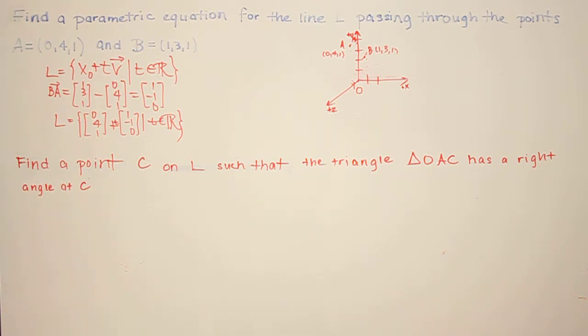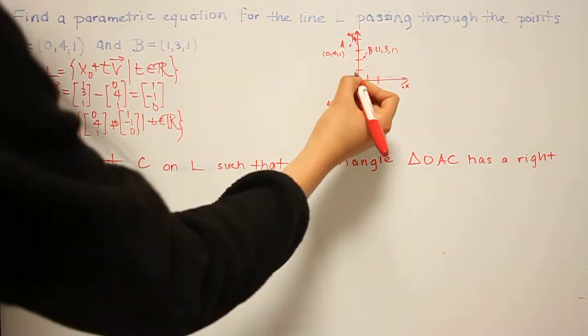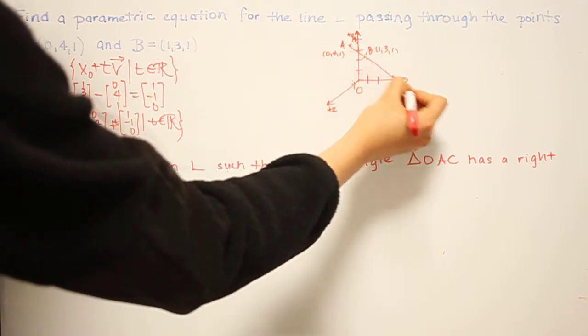So geometrically, this would be a line through A and B in R3.